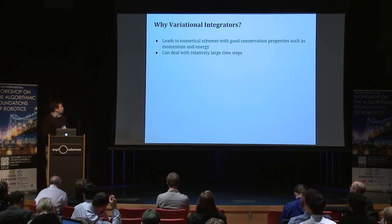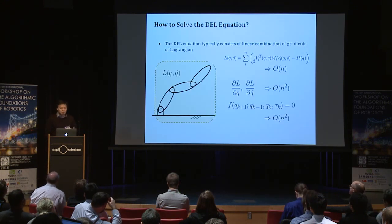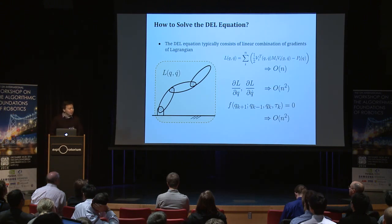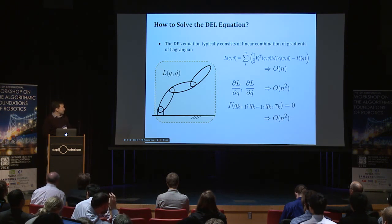Why use variational integrators? As I said, they give better energy behavior and can handle large time steps. But there is a dark side: the computational complexity. The DEL equation typically consists of a linear combination of gradients of Lagrangians. Computing the Lagrangian for a multi-body system takes linear time, so computing its derivatives takes O(n²). Evaluating the DEL equation is therefore O(n²).